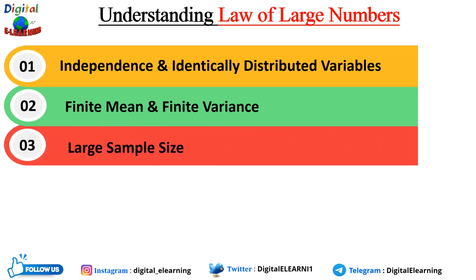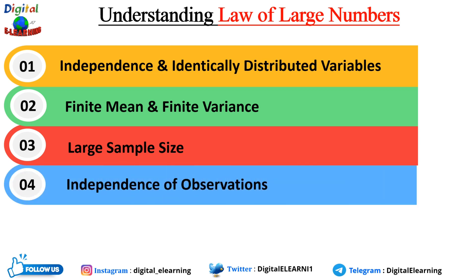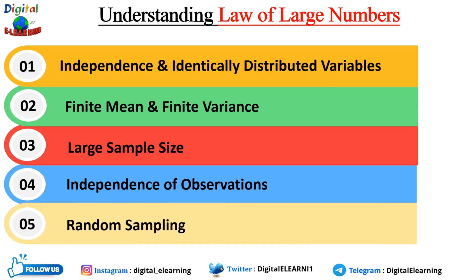Third, large sample size: the Law of Large Numbers holds only when the sample size is sufficiently large. Fourth, independence of observations: the Law of Large Numbers assumes observations are independent of each other — the outcome of one observation should not be influenced by previous or future observations. Finally, random sampling: the Law of Large Numbers assumes that observations are randomly sampled from the population. These are the key conditions for the Law of Large Numbers to apply.